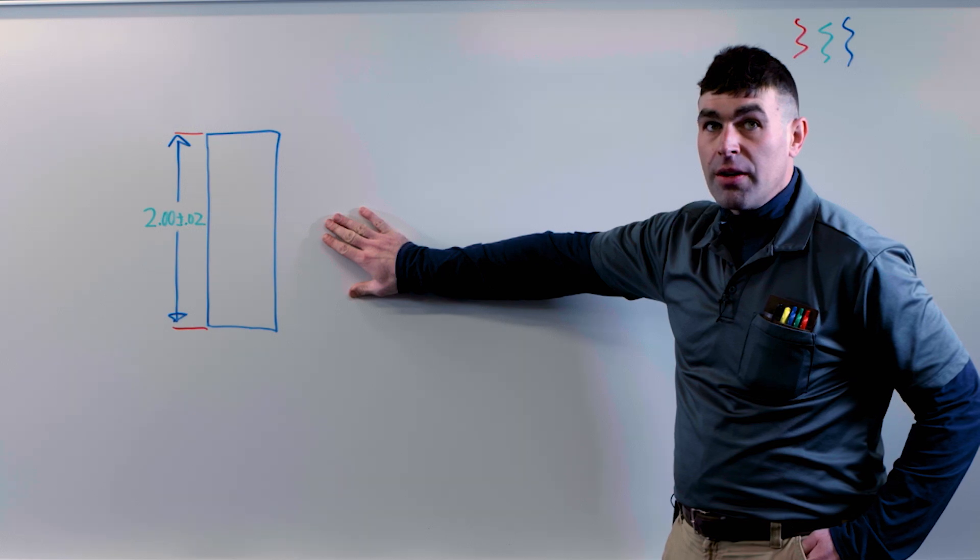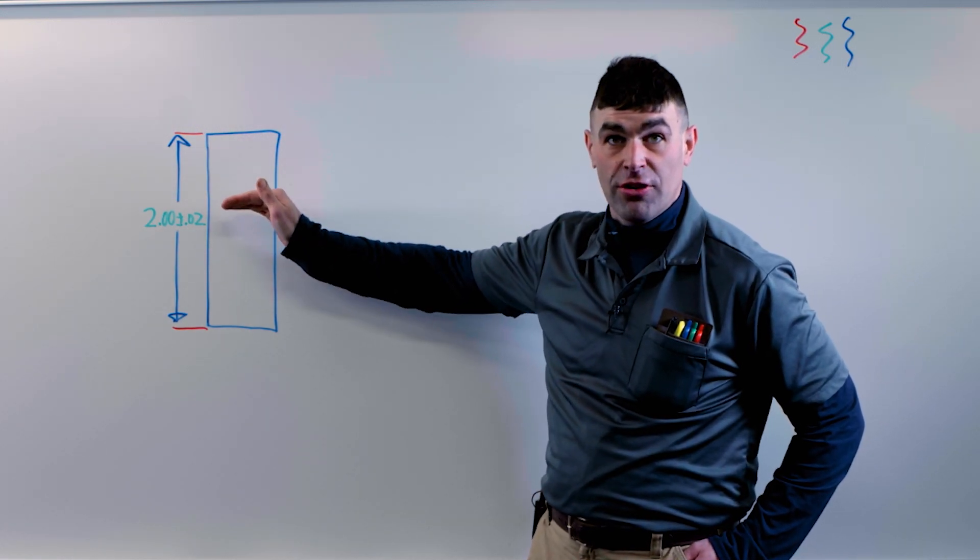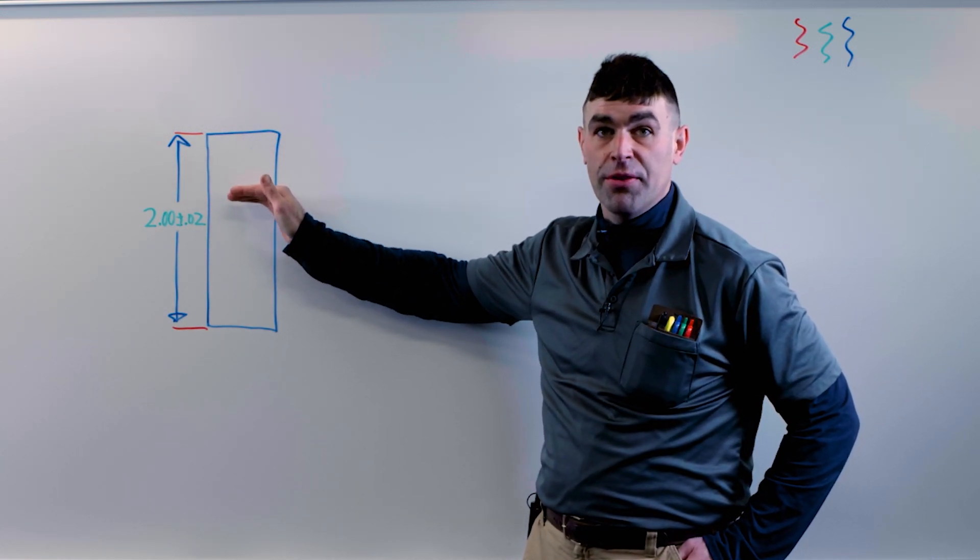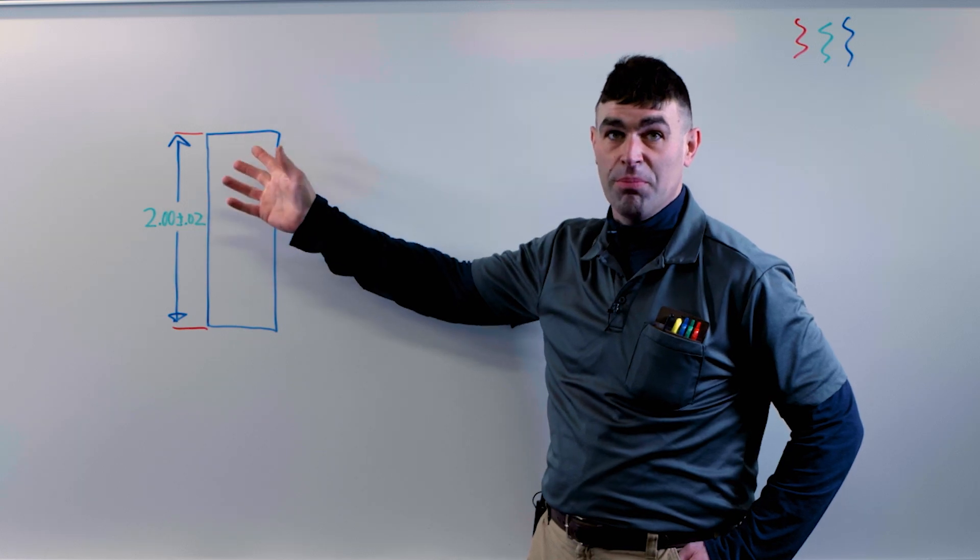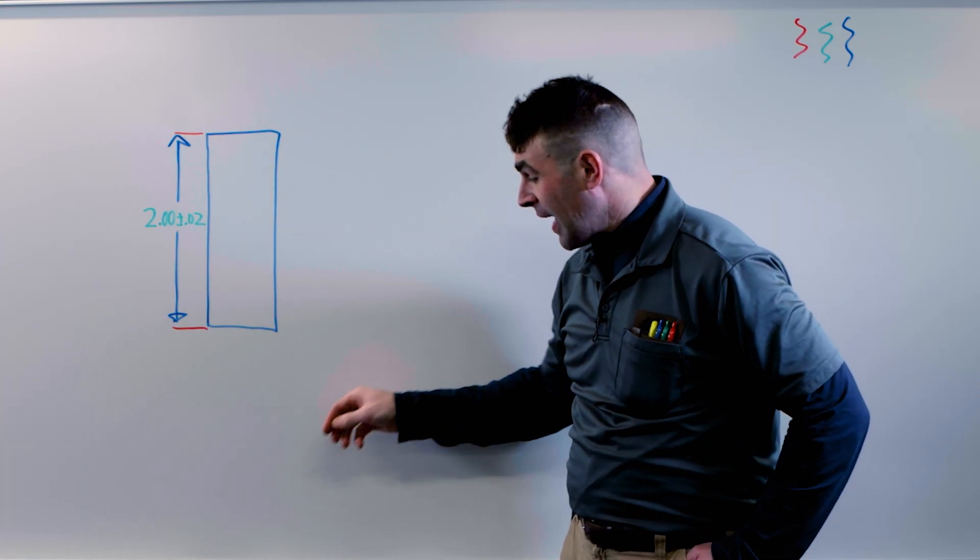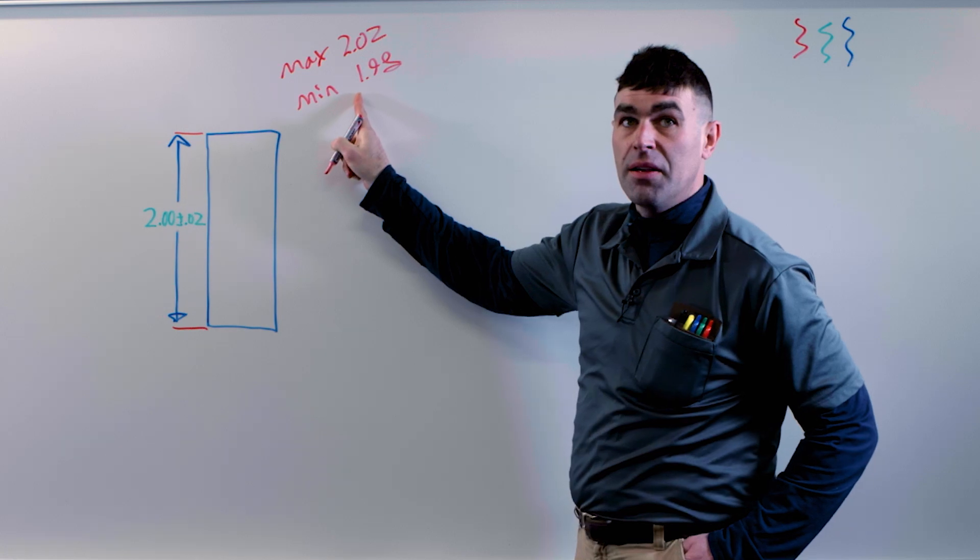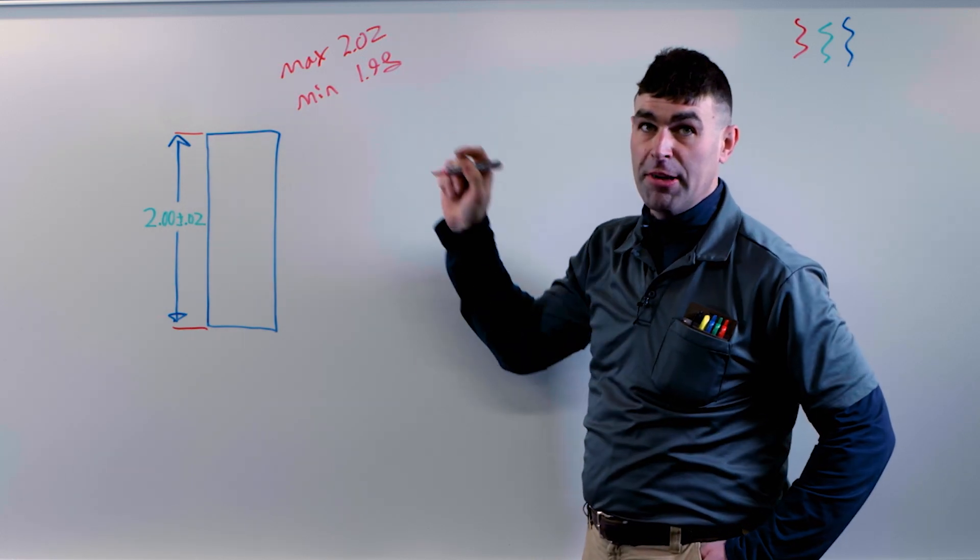If we have one part, our tolerance can just be the requirement. Plus or minus 20 thousandths for a total of 40. And we've got a max and a minimum or an upper limit and a lower limit.